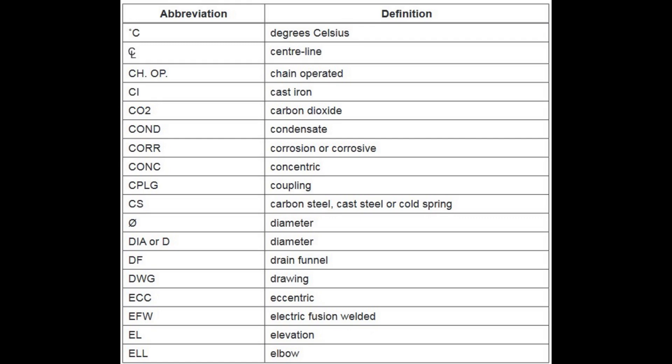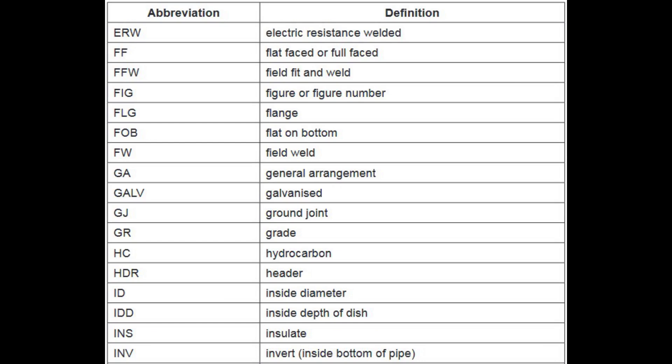Slash O or DIA stands for Diameter. DF stands for Drain Funnel. DWG stands for Drawing. ECC stands for Eccentric. EFW stands for Electric Fusion Welded. EL stands for Elevation. ELL stands for Elbow. ERW stands for Electric Resistance Welded.